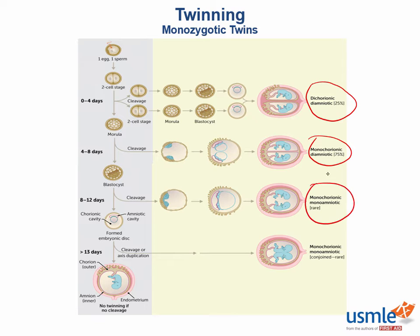Very rarely, less than 1% of monozygotic twin embryos will split after the amnion forms. These will be monochorionic, monoamniotic. So these twins are at risk for being conjoined, especially if the split occurs after the bilaminar disc forms after day 13.